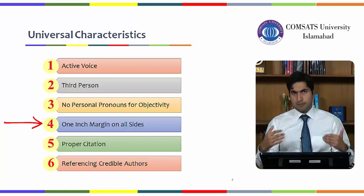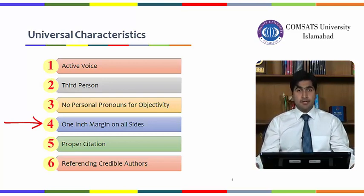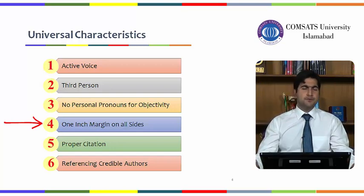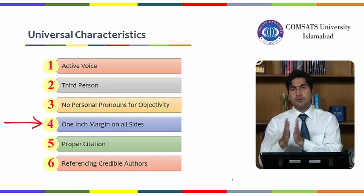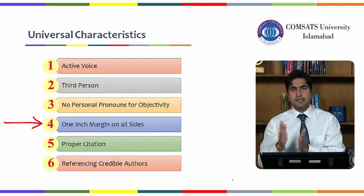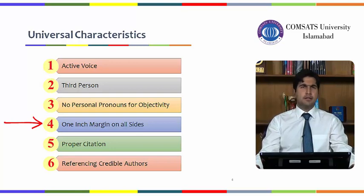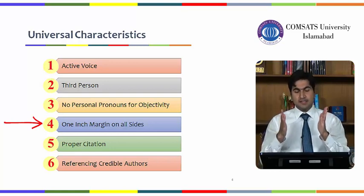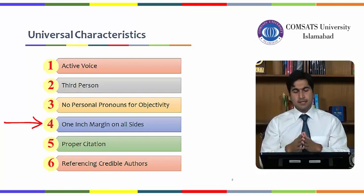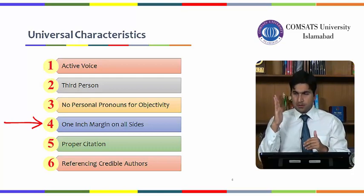The next universal characteristic is one-inch margin on all sides. This refers to the formatting styles in academic and technical writing. For arts and humanities you use MLA — Modern Language Association style. For social sciences and other domains you use APA — American Psychological Association style. One of the characteristics of the APA style is keeping a one-inch margin on top, right, left, and bottom of your document.